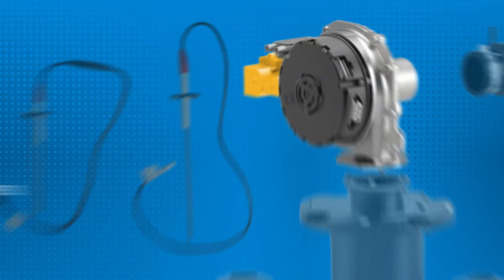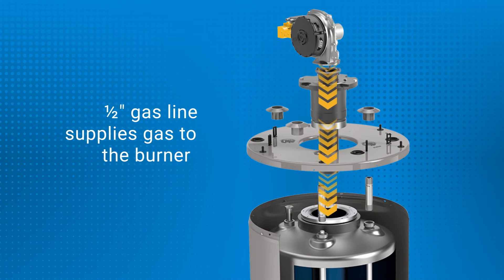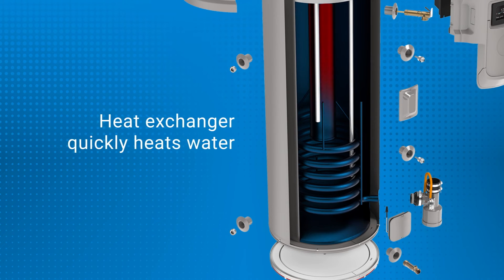Upon successful completion of the pre-purge cycle, the gas valve opens and gas flows into the burner for ignition. The igniter sparks and combustion begins.